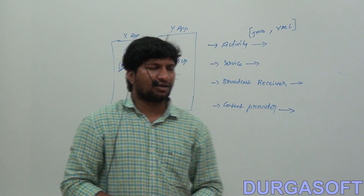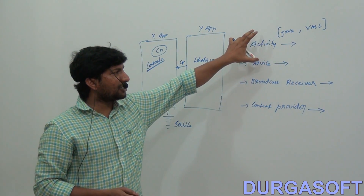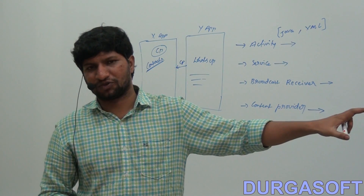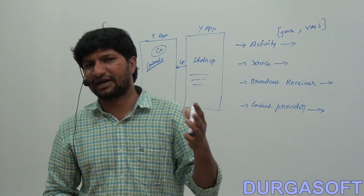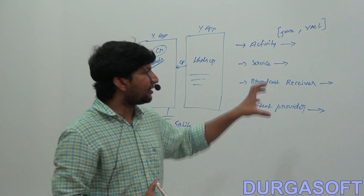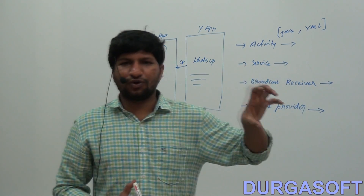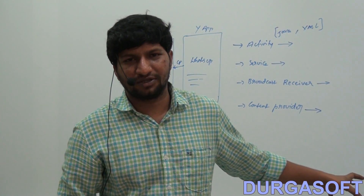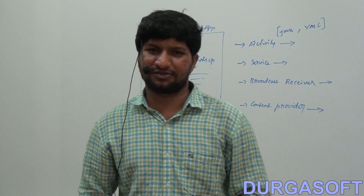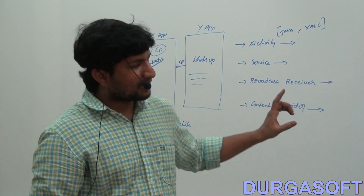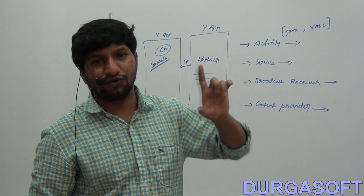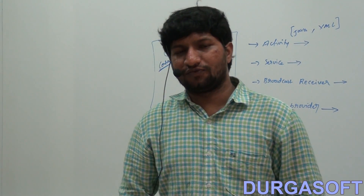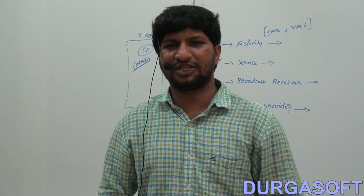You can also share your own application's data by creating your own Content Provider. These are the four major components of Android: Activity, Service, Broadcast Receiver, and Content Provider. The complete Android application development depends on these four components. However, having knowledge of only these four components is not enough to build complex enterprise applications — we will discuss what else is needed in the next session.